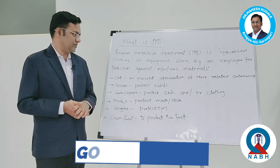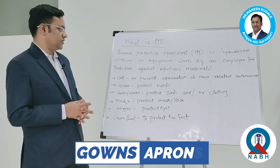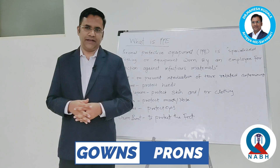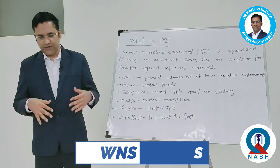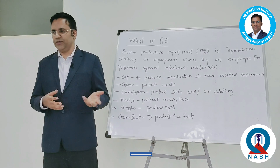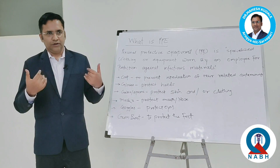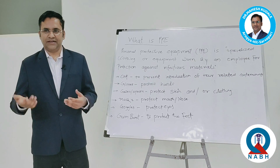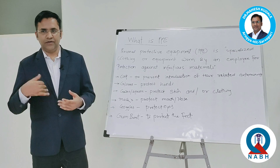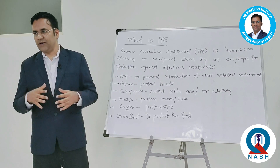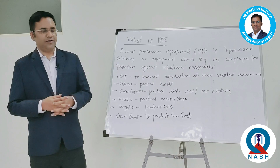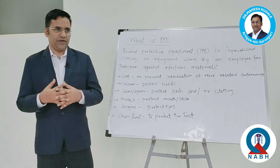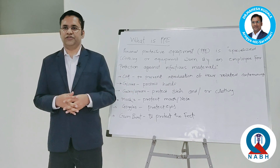Next, Gowns और Aprons. Gowns और aprons क्यों होते हैं? To protect skin and our cloth. बहुत बार कोई infectious patient आते हैं — अभी COVID चालू है, खांसते हैं, और बहुत सारे infection के patient रहते हैं. उनका infection आपके cloth को लग सकता है, blood आपके cloth को लग सकता है, और वहाँ से आपको भी वो बीमारी हो सकती है — disease फैल सकता है, transfer हो सकता है.